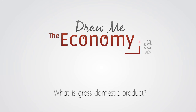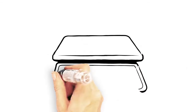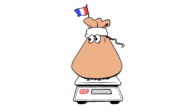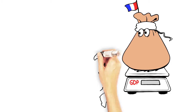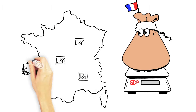What is a Gross Domestic Product? Gross Domestic Product, GDP, is an indicator which measures a country's wealth — that is, everything that is produced in the country in one year.